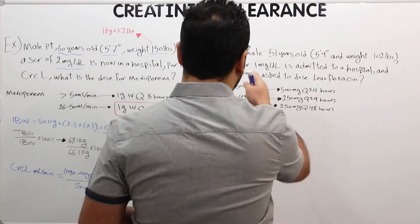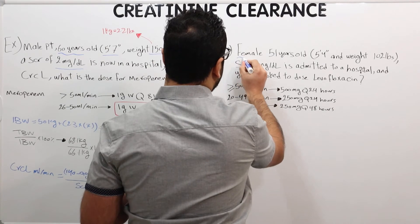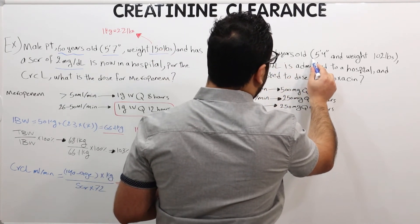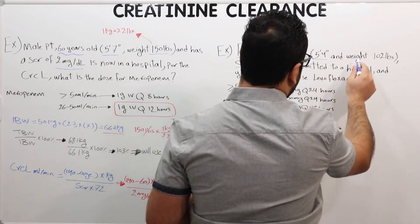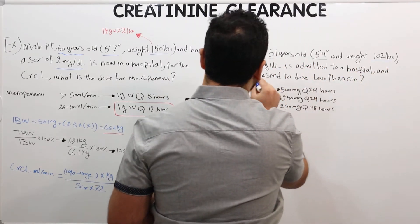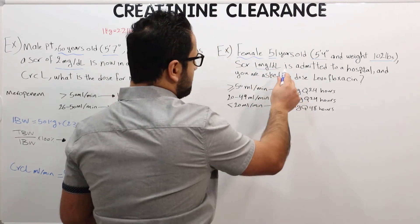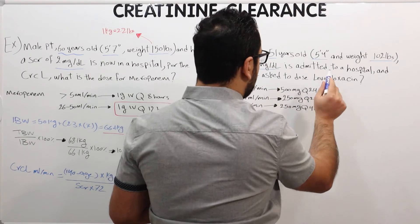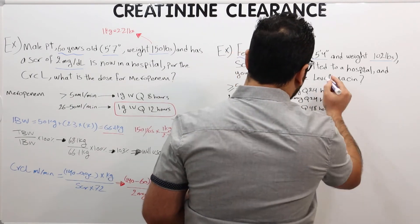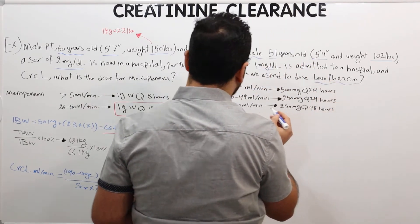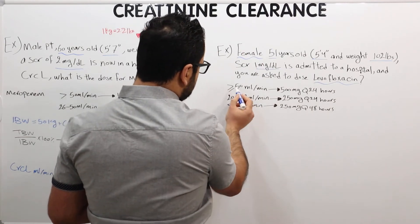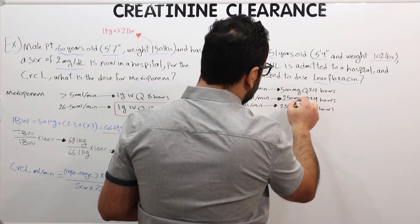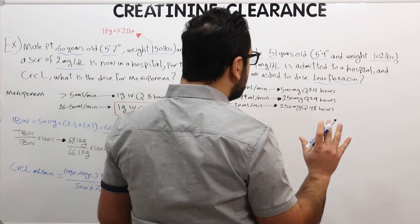Now let's move to question number two. We have a female patient, 51 years old, height five feet and four inches, weight 102 pounds, serum creatinine 1 mg/dL, admitted to the hospital. We are asked to dose levofloxacin. Depending on creatinine clearance — if ≥50, 20–49, or less than 20 — we will determine the appropriate dose.